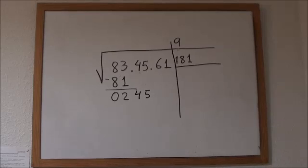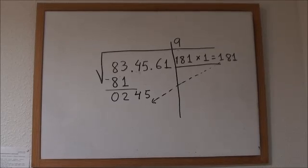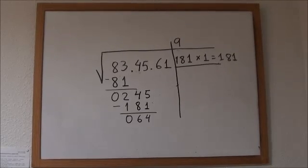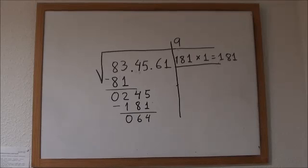With 1, we get, obviously, 181. And now we bring it down and subtract, which is 64. We move that digit that we just added, 1, up next to the 9 we already had.